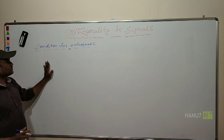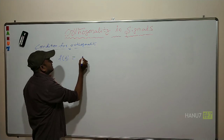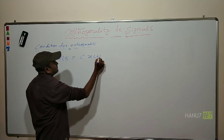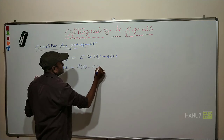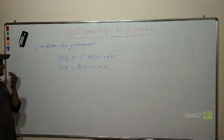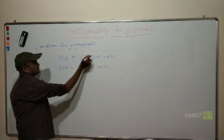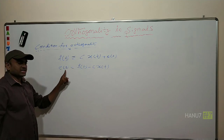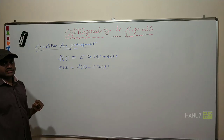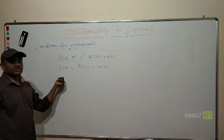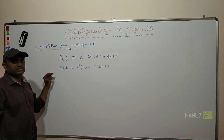So let us see what is the condition for orthogonality. Just now we have seen signal F(t) can be represented in terms of X(t) with this formula. We have seen that E(t) = F(t) − C * X(t). In order to have a better approximation — like F(t) if it is exactly equal to X(t) — we have to make sure that this error is minimum. There should not be any error in the approximation. There are three approaches for us here.